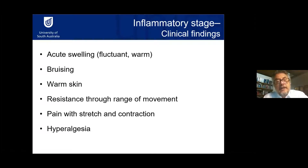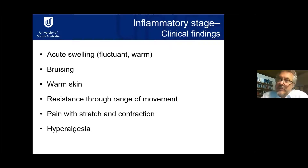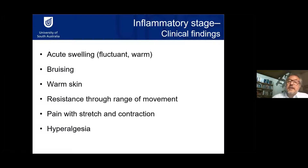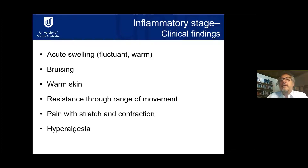In the inflammatory phase, there may be acute swelling, warmth, bruising, and hyperalgesia. Within the first two to three days, it's near impossible to really understand what's happened because the early hyperalgesia from neutrophils, bradykinin, serotonin, and other chemicals hypersensitize the nerves — everything will be sore on palpation. It usually takes five to six days before symptoms localize, and you have a better idea of what actually happened.